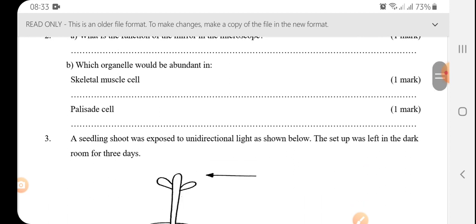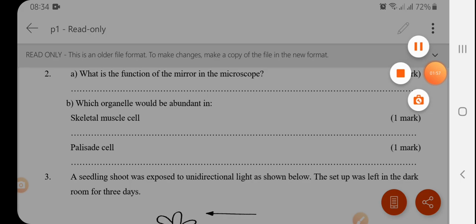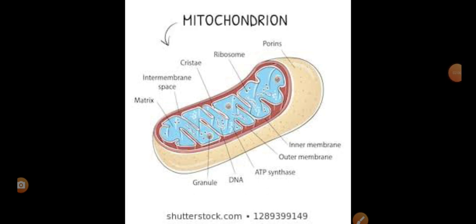Which organelle will be abundant in the skeletal muscle cell? So we have to remember that the skeletal muscle cell is responsible for movement. So the organelle that will be abundant here will be the mitochondrion. This is site for respiration.